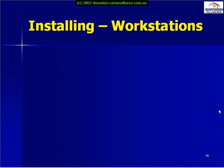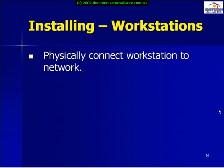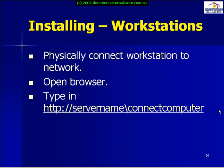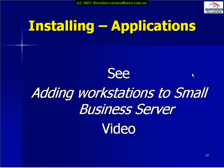We now need to install our workstations into our network. The first thing you need to do is physically connect them to the network. Open a web browser on the workstation and type in server name slash connect computer into your browser. This will launch a wizard to allow us to complete the installation of our workstation. For more information, see our video on adding workstations to Small Business Server.